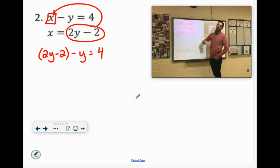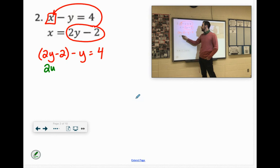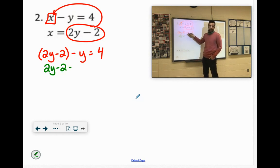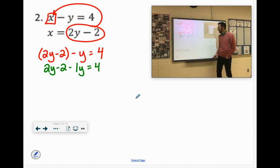Now, these parentheses, there's nothing to distribute. You could distribute a 1, so essentially the parentheses are unnecessary. But let's do this. Negative y is negative 1y. That might be helpful to think of it like that.